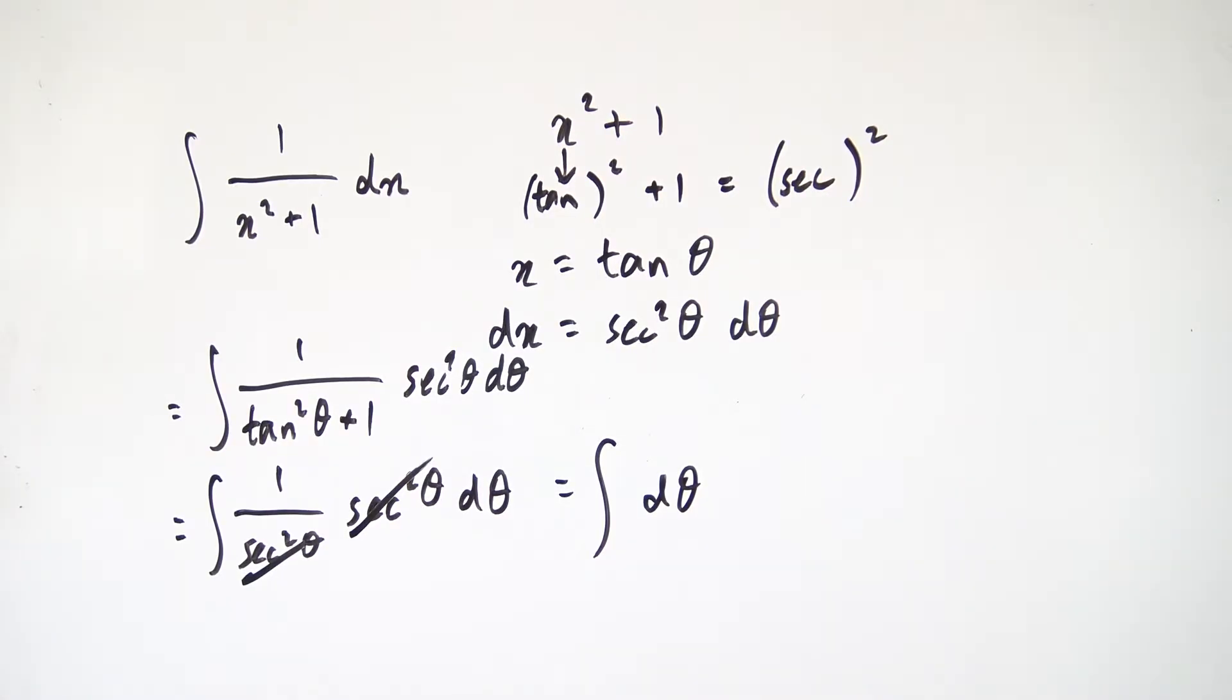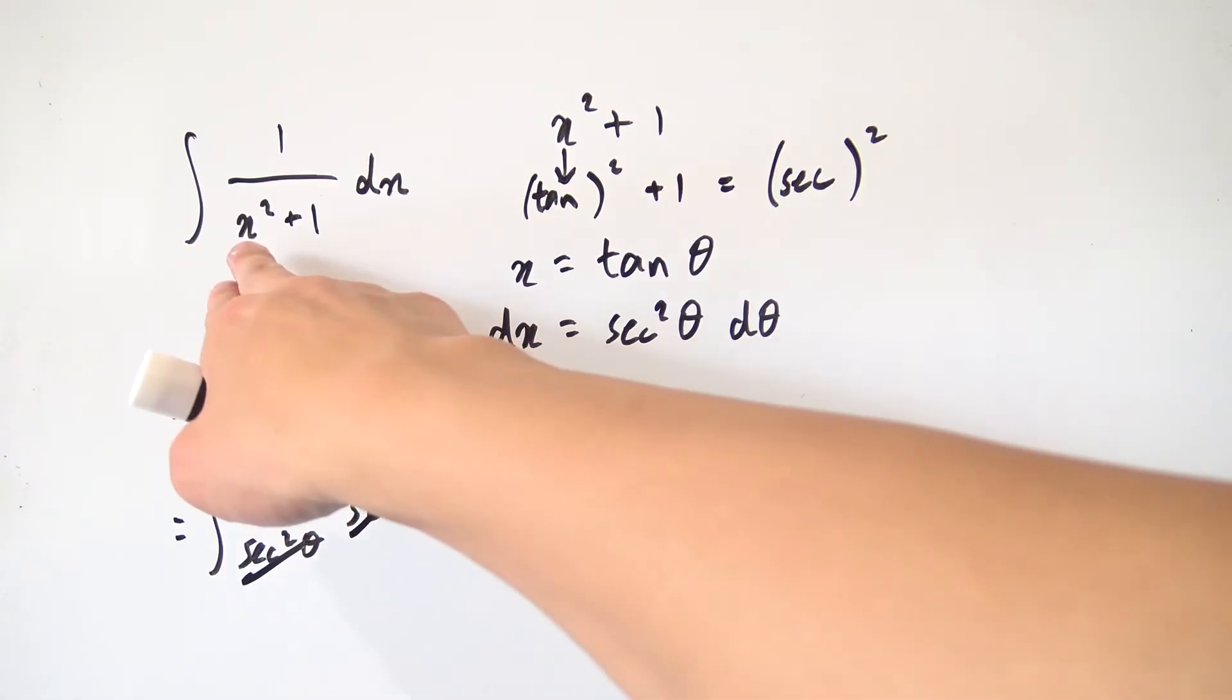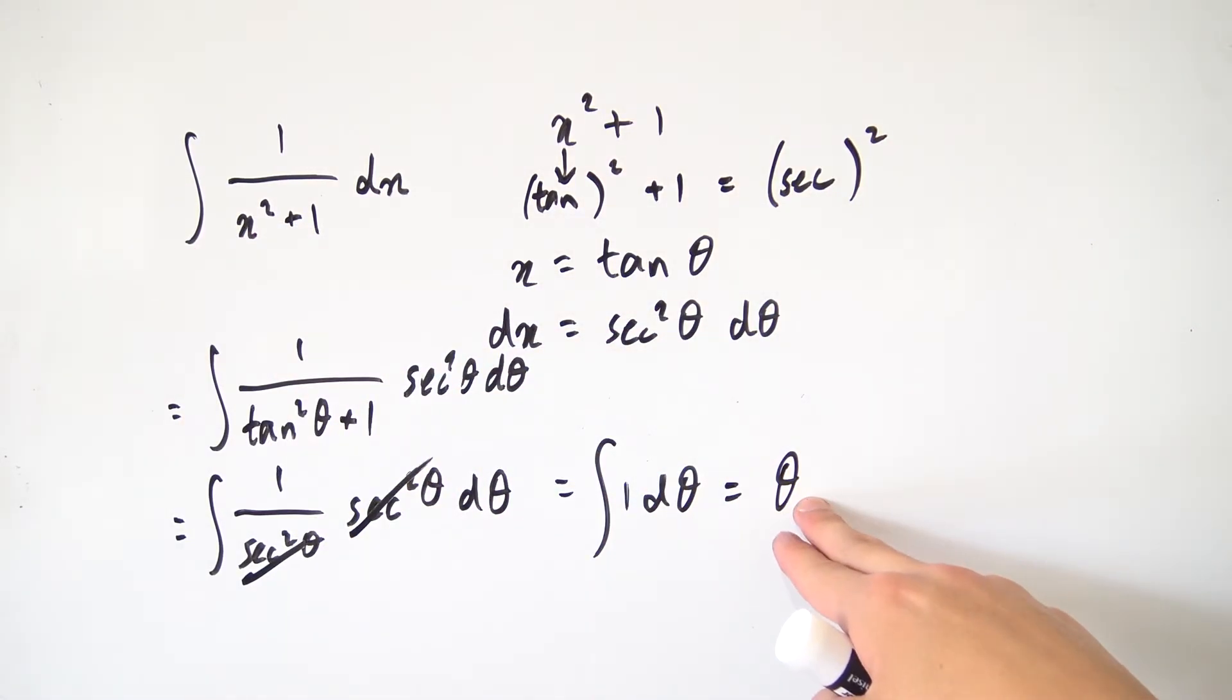And integrating d theta or 1 times d theta is really quite easy. It's just going to be theta itself. Okay. And now remember, we started with x's. We started with x as our variable. So ideally, we would like to end up with x in our answer. And to do that, we can just use our substitution right here because we have a single theta by itself.